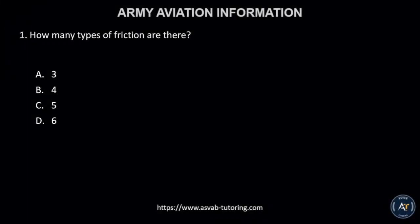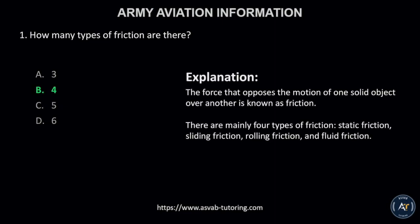Number 1. How many types of friction are there? A, 3; B, 4; C, 5; or D, 6? The correct answer is letter B, 4. This is because the force that opposes the motion of one solid object over another is known as friction. There are mainly four types of friction: static friction, sliding friction, rolling friction, and fluid friction.